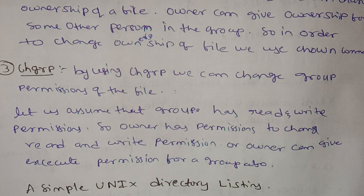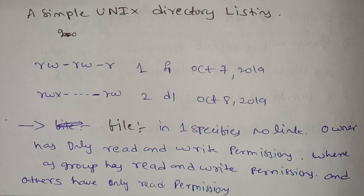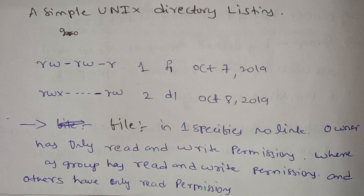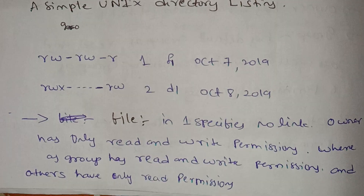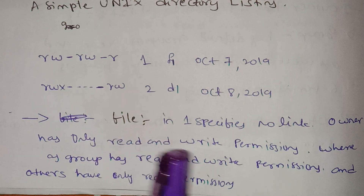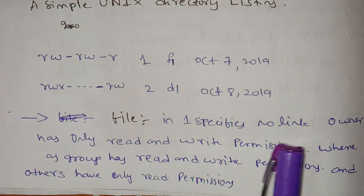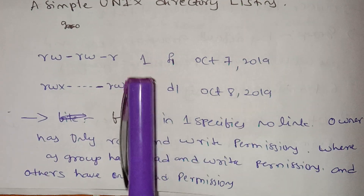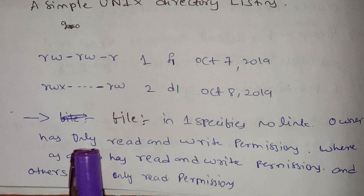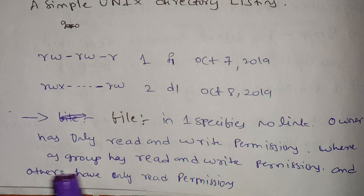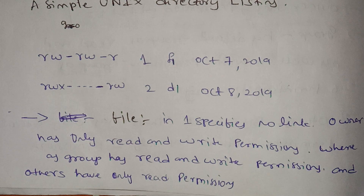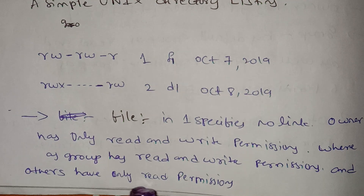Here is a file example. The owner has only read and write permissions. The group has read and write permissions. Others have only read permissions.